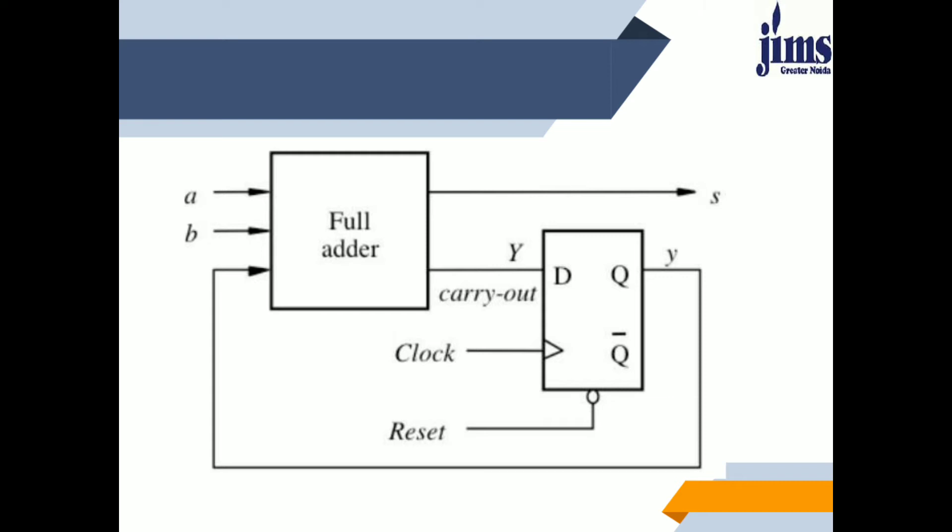In this block diagram, you can see I am using a full adder as well as a D flip-flop. We will discuss D flip-flop in detail later, but to understand this serial adder, we just need to know two basic things about D flip-flop. A D flip-flop gives an output according to its input — the output will be the same as the input when the clock pulse is high.